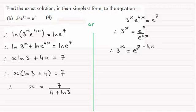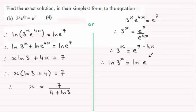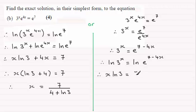At this point we take natural logs of both sides. We get the natural log of 3 to the power x equals the natural log of e to the power 7 minus 4x. Using the power rule for logs on both sides: x times the natural log of 3 equals 7 minus 4x multiplied by the natural log of e. Since natural log of e is 1, that's just 7 minus 4x.